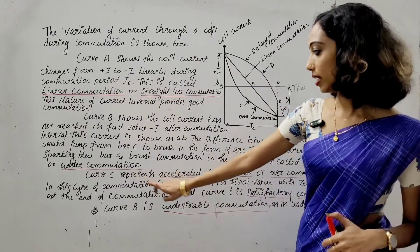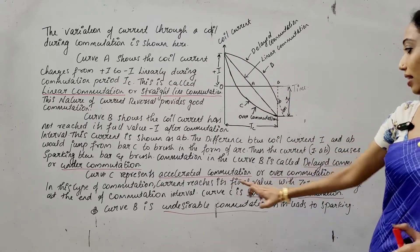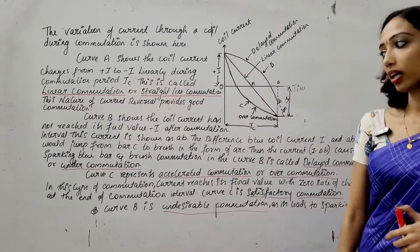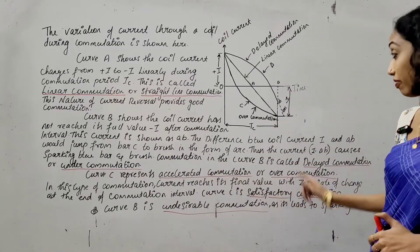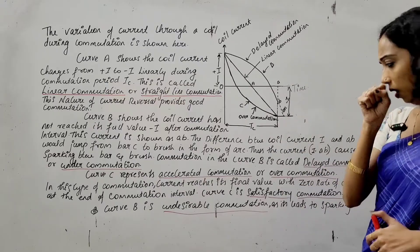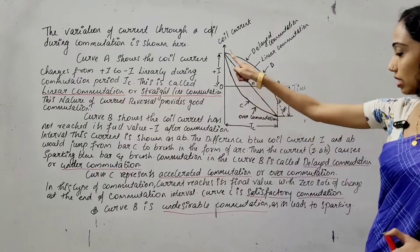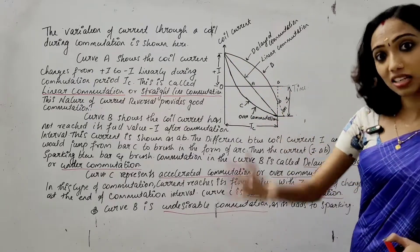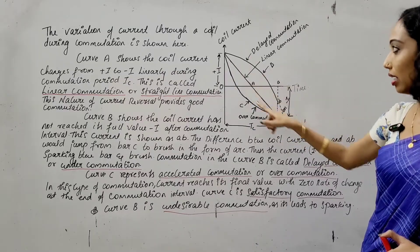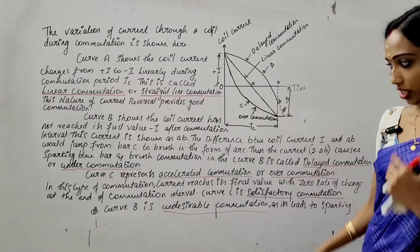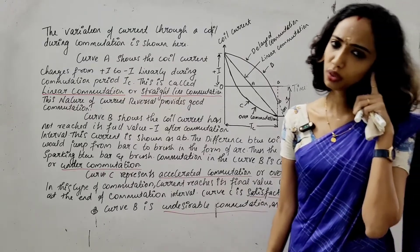Curve C represents accelerated commutation or over-commutation. In this type of commutation, the current approaches its final value with zero rate of change at the end of commutation. This is called satisfactory commutation or good commutation.